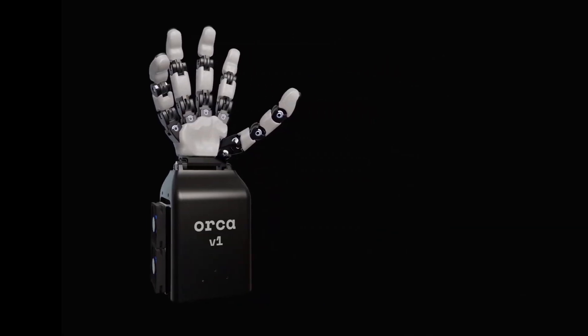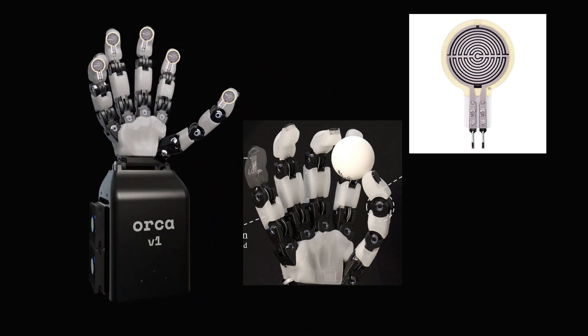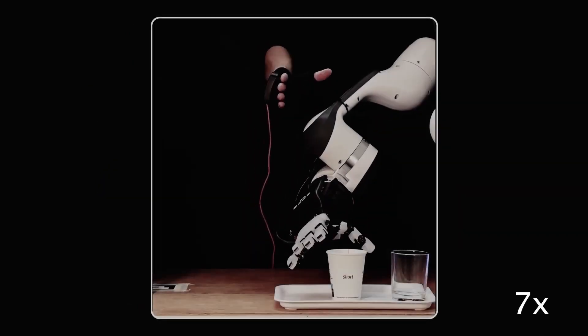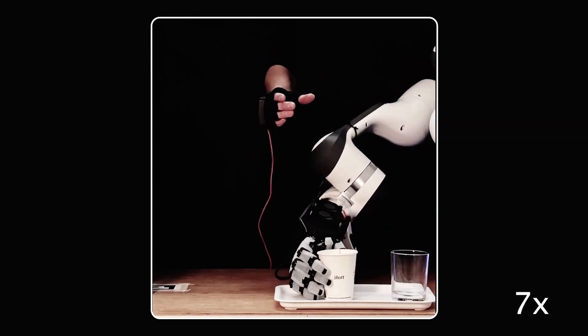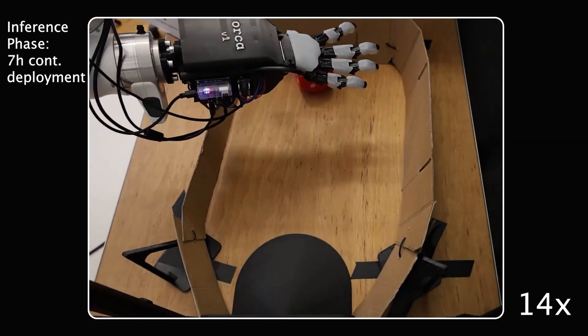Here, it's worth mentioning the fingertip sensors. Orca uses common force-sensitive resistors covered with a silicone skin. Instead of measuring continuous force values, the system simply treats them as threshold switches, detecting whether contact is present or not. This is likely because FSRs tend to drift after repeated use. In other words, the tactile information available is actually very limited.